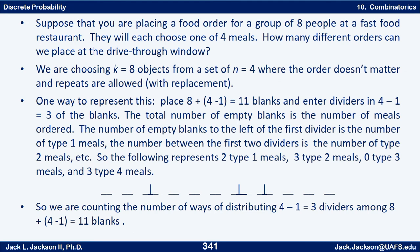Now here's one way we can keep track of this. Let's take a blank for each of the eight people — so eight blanks — and then we're going to add three dividers, which is N minus 1 dividers. This gives us a way of representing how many of each meal are chosen. For example, this arrangement says the number of blanks to the left of the first divider represents two number one meals; between the next two dividers there are three blanks so three number two meals; no blanks means zero type three meals; and three blanks at the end means three type four meals.